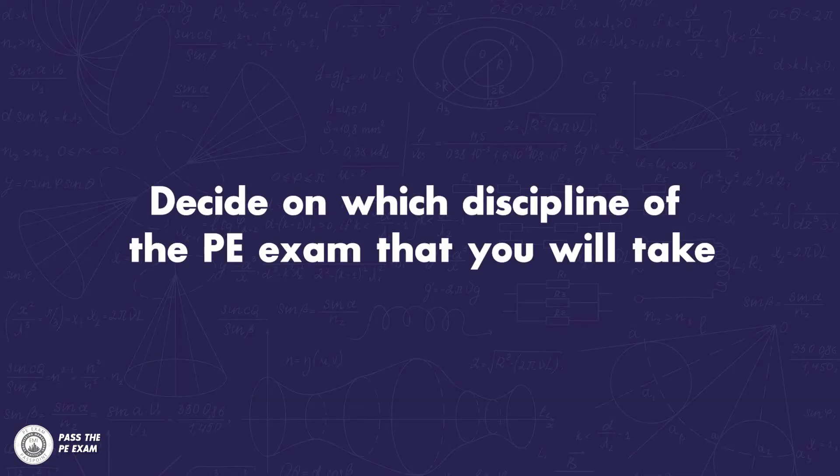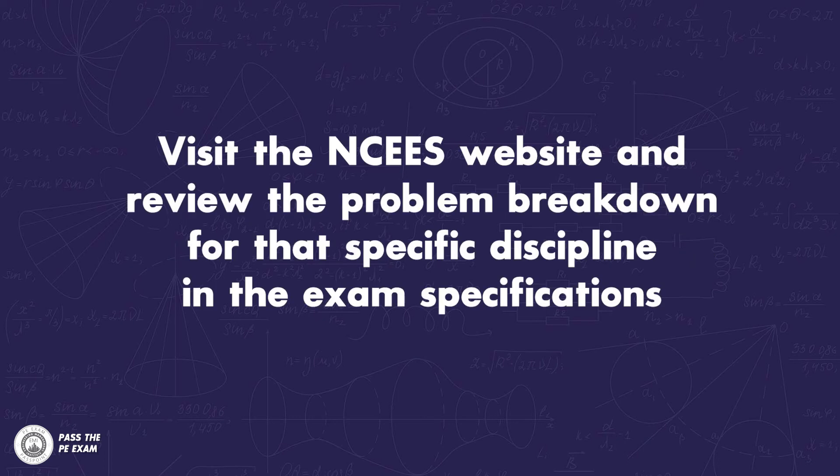So essentially, this is a two-step process. Step one: decide on which discipline of the PE exam that you will take. Step two: visit the NCEES website and review the problem breakdown for that specific discipline in the exam specifications. And remember, if you take one of the disciplines that has both a breadth and depth exam, you will need to also select which depth topic you plan to take. You can find the link to that all-important NCEES webpage in the description below.